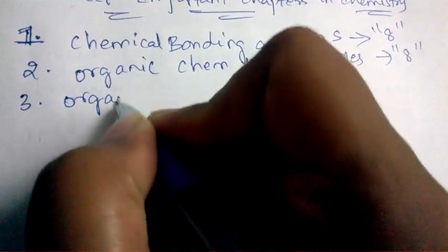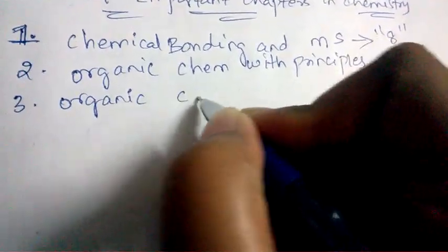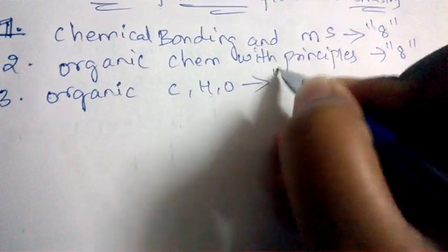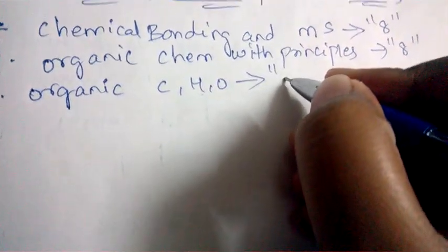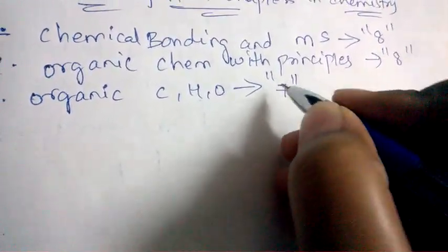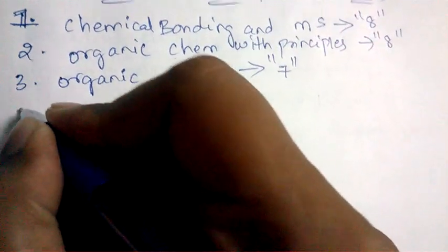Next important chapter is Organic Compounds Containing C, H, O. From this chapter, seven questions will be asked.